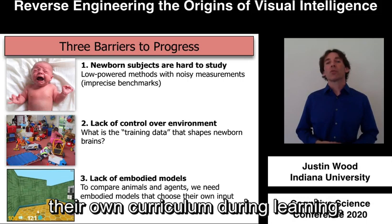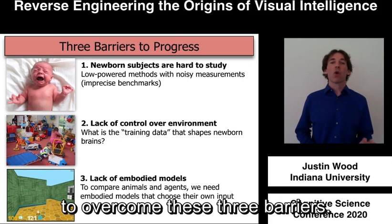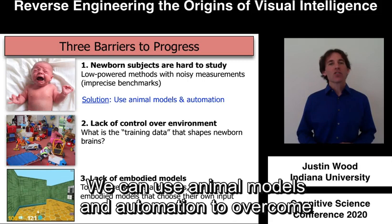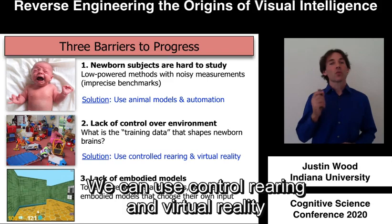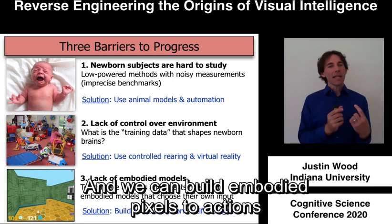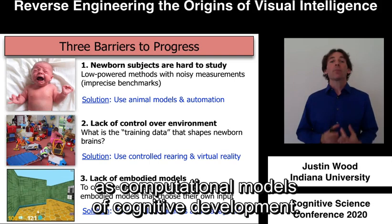In this talk, I'll explain how we are now positioned to overcome these three barriers. We can use animal models and automation to overcome the first barrier. We can use control rearing and virtual reality to overcome the second barrier. And we can build embodied pixels-to-actions artificial agents and then use those agents as computational models of cognitive development.